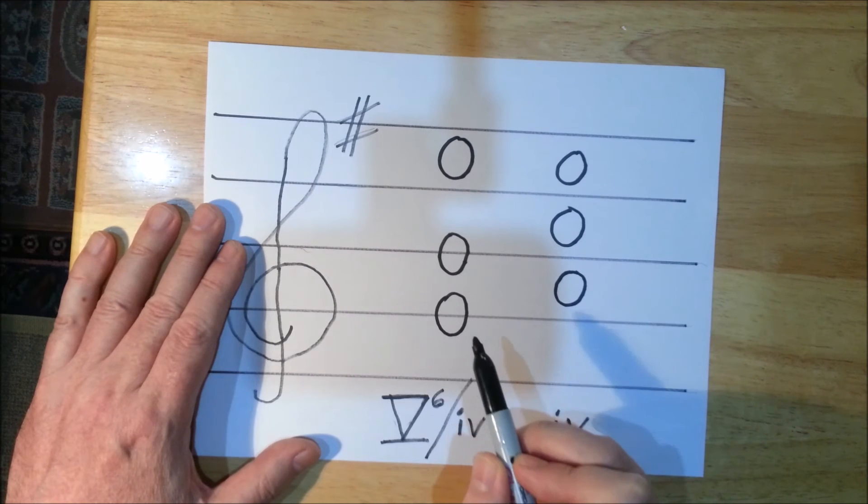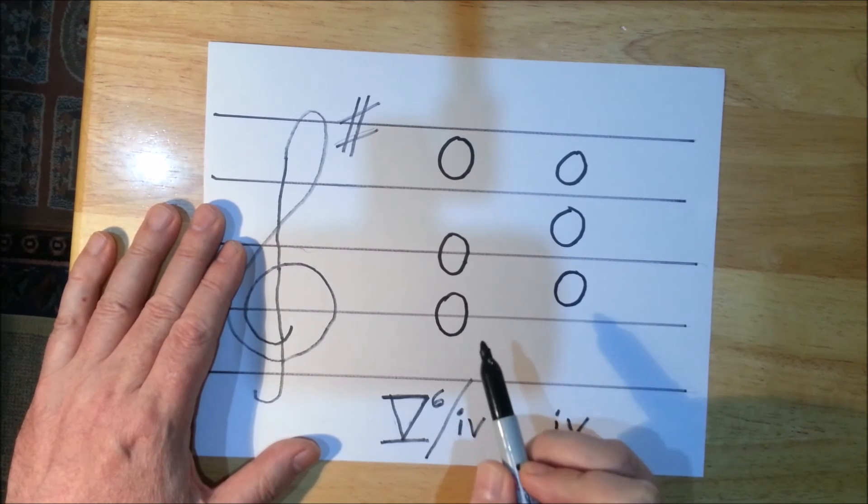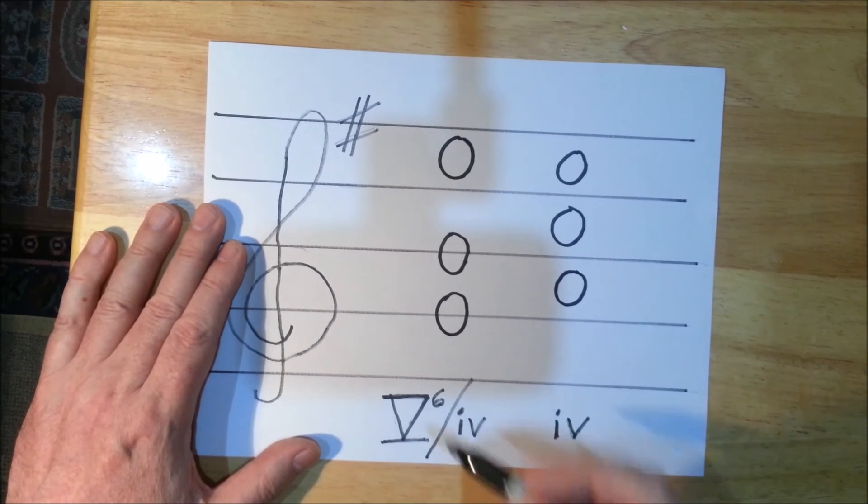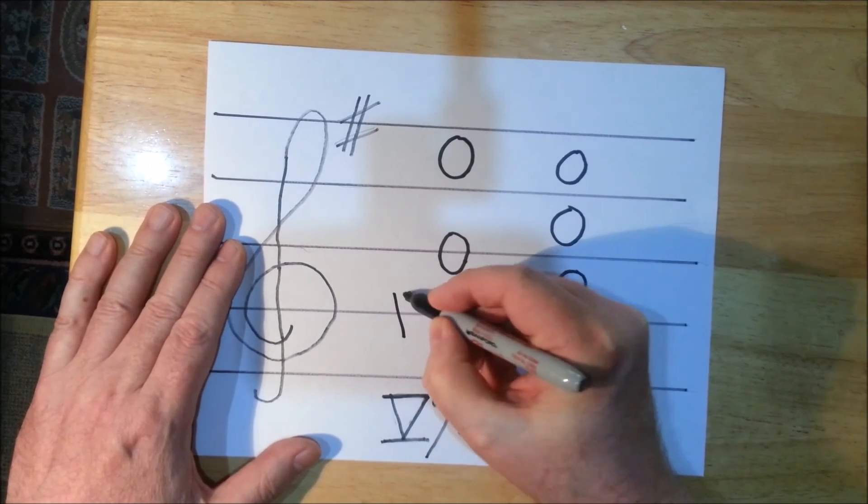In A minor the raised seventh is the G. So the G becomes a G sharp and that makes the five chord major. So I'm going to add a sharp to the G.